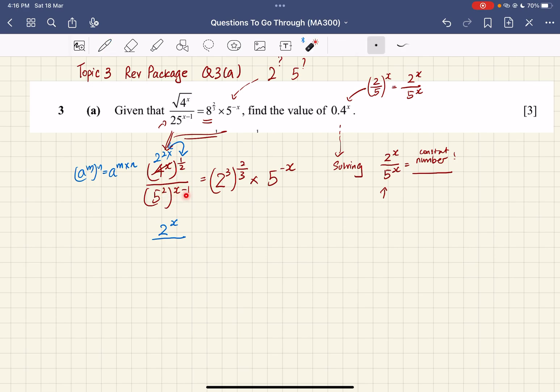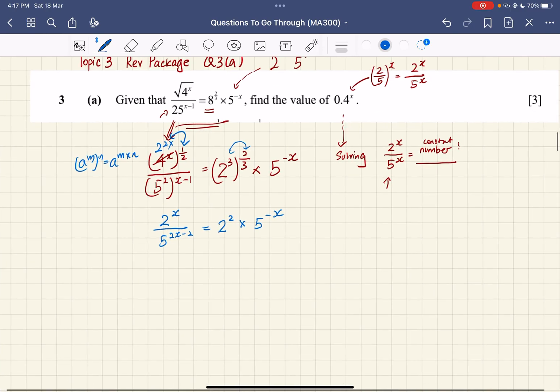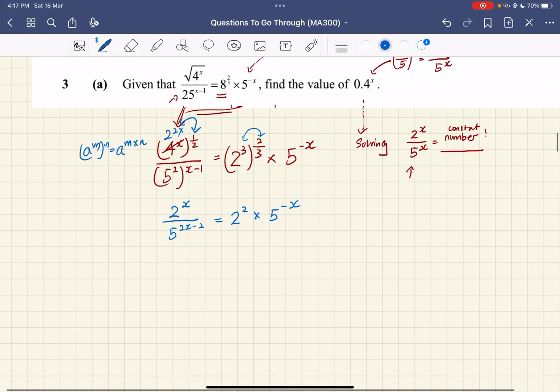In the denominator, 2 multiplied by (x-1). Just be careful - this is actually 2 multiplied by (x-1). A lot of people will think that is 2x-1, which is not true. It's actually 2x-2. So this is 5 to the power of (2x-2). On the right side, 3 multiplied by 2/3 gives us 2^2 multiplied by 5 to the power of negative x.